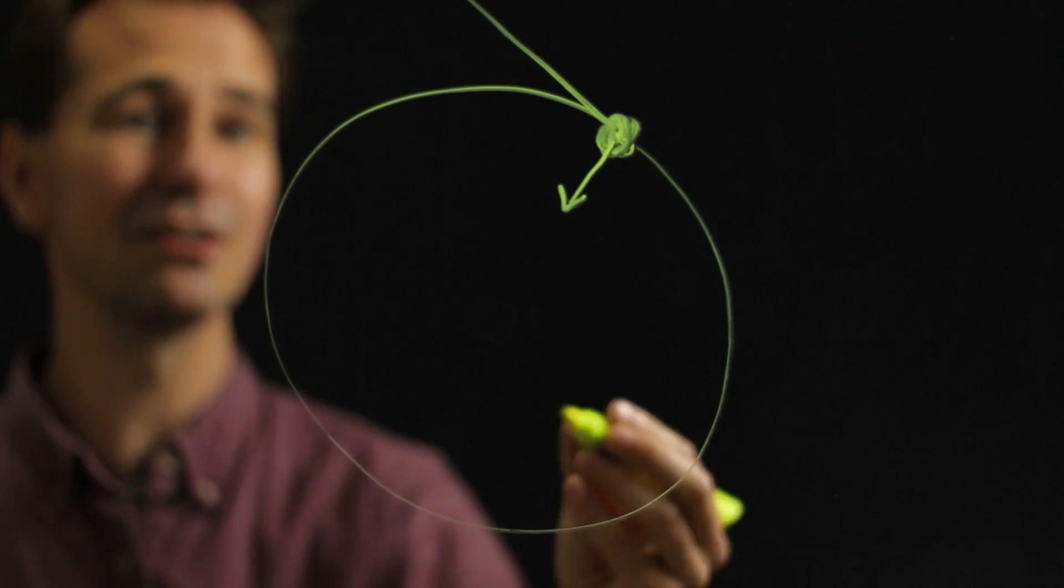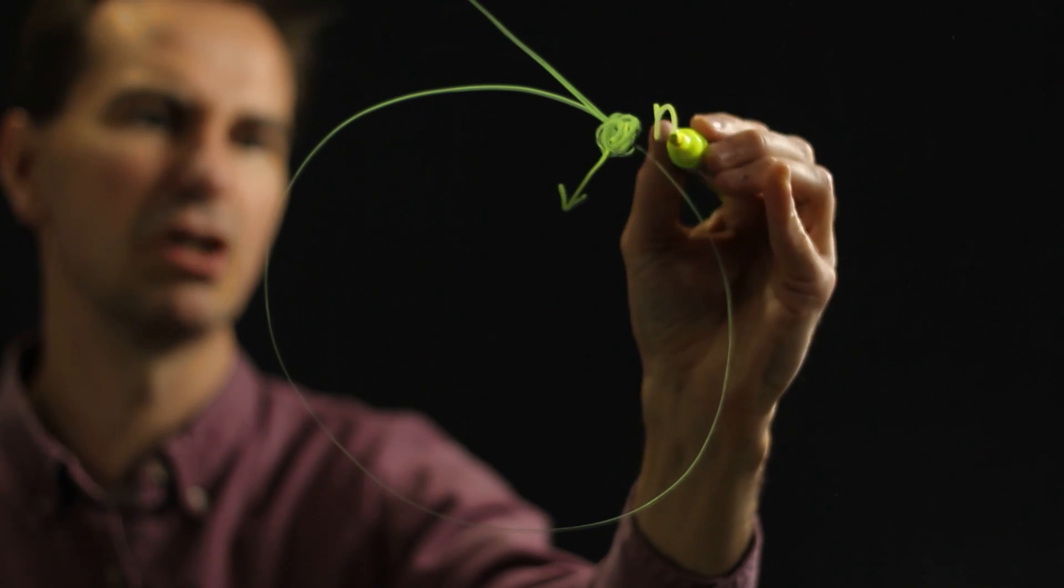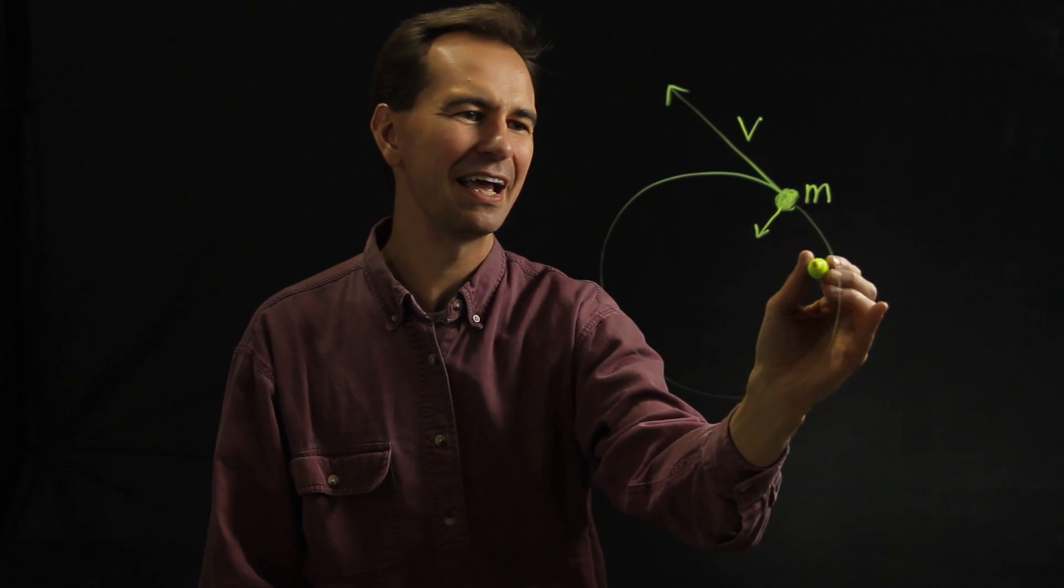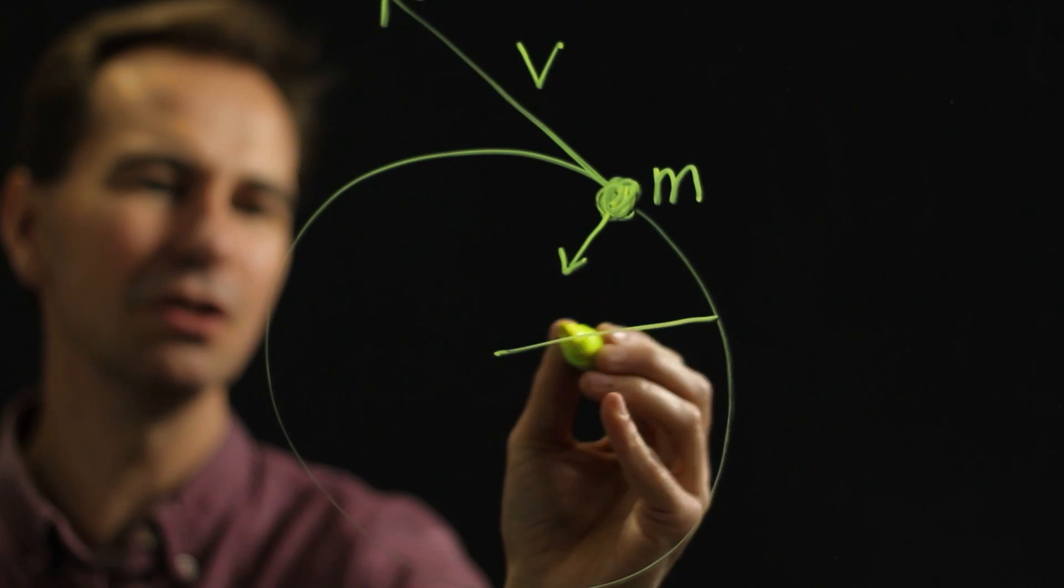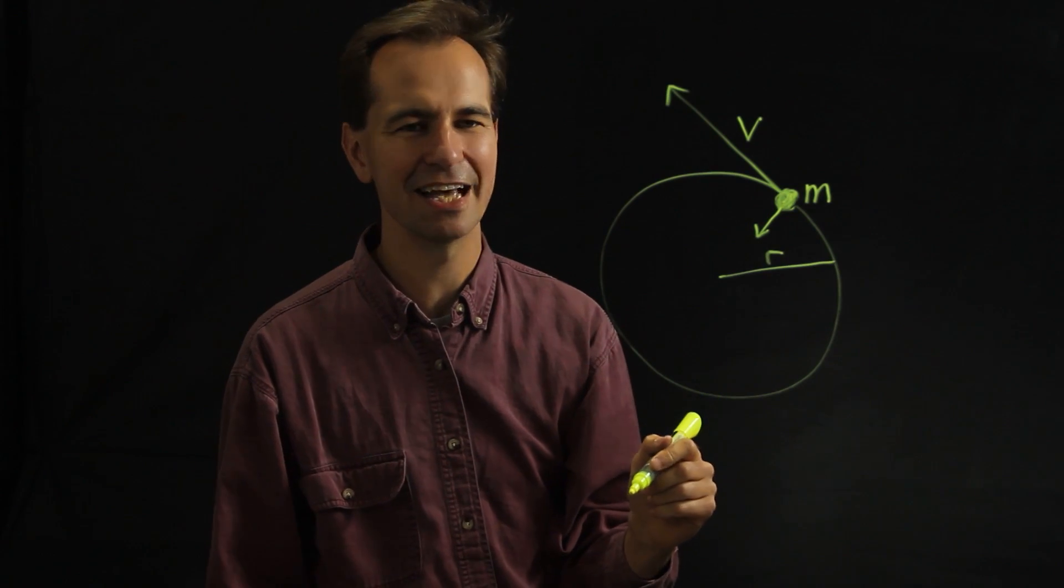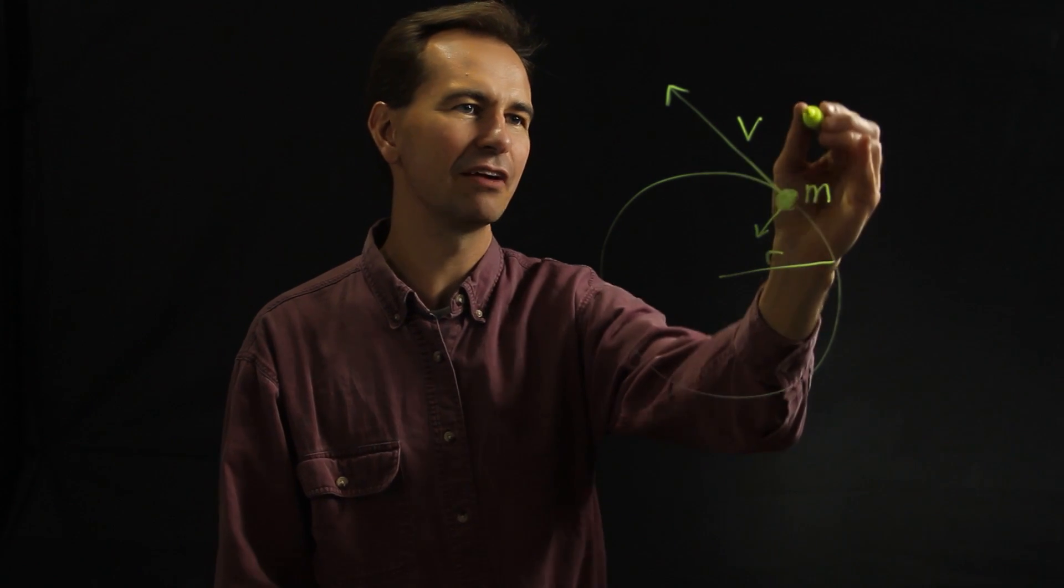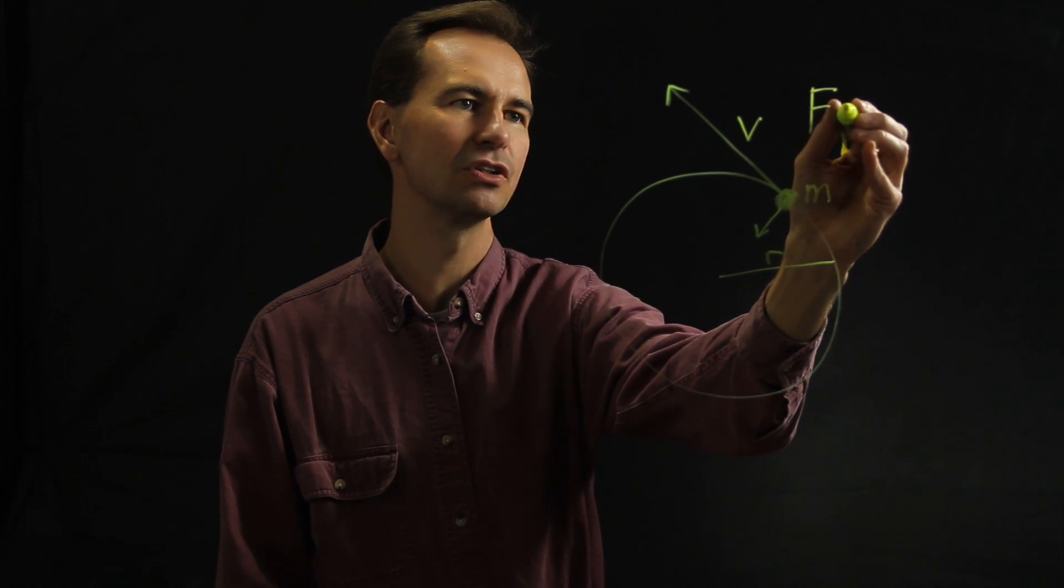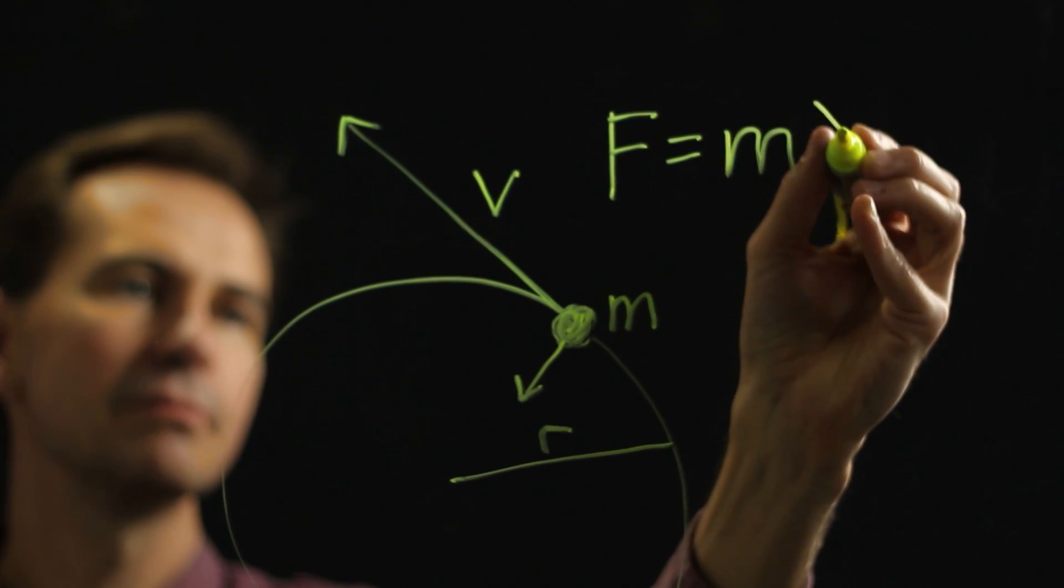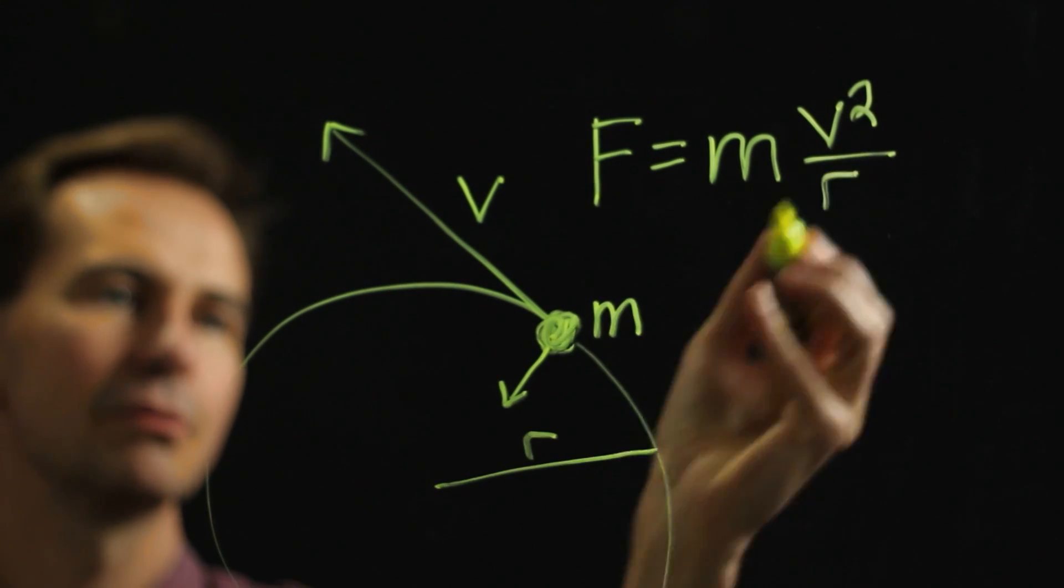And it turns out that if you have a certain mass and it's traveling at a certain speed and it's traveling in a circle with a certain radius, it takes a certain amount of force to cause that object to travel in that circle at that speed. And that force, that centripetal force, is just the mass times the velocity squared divided by the radius.